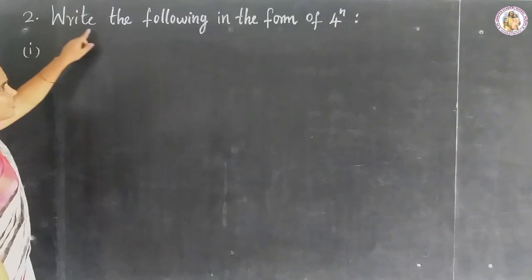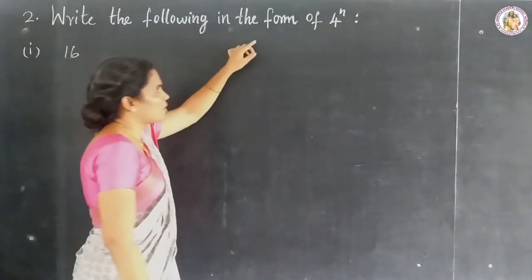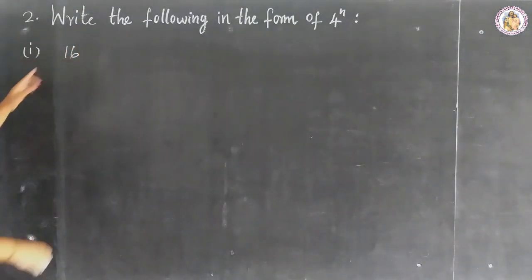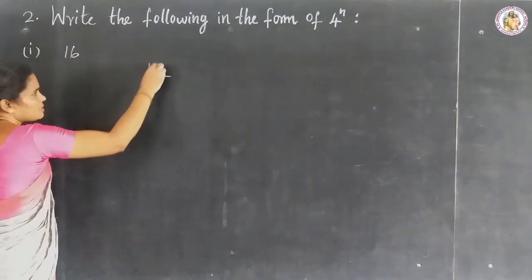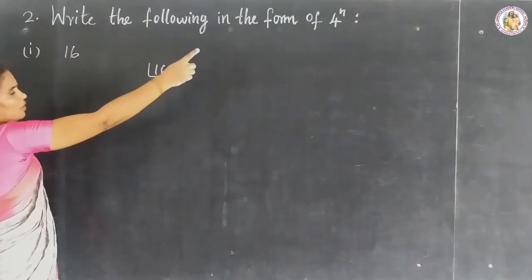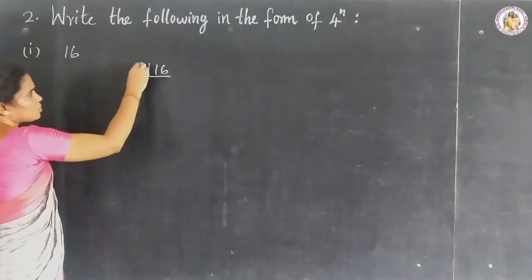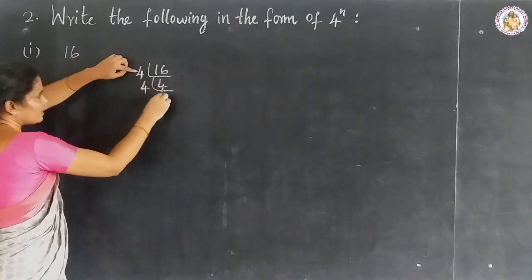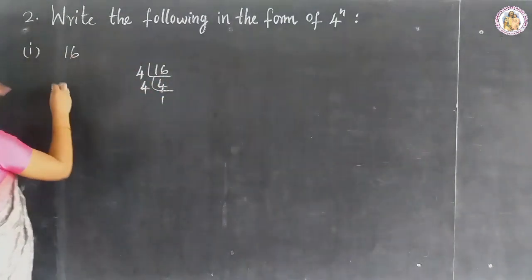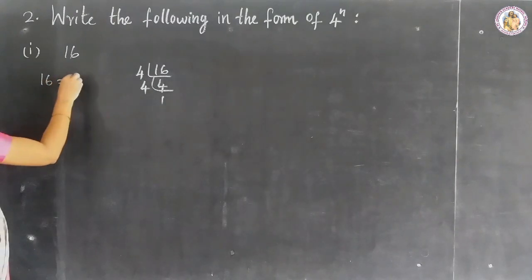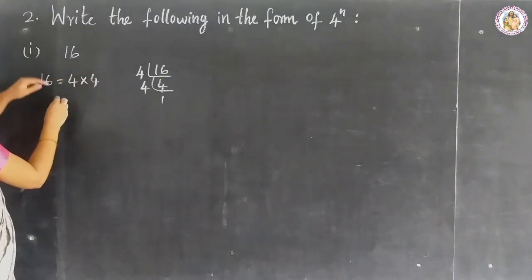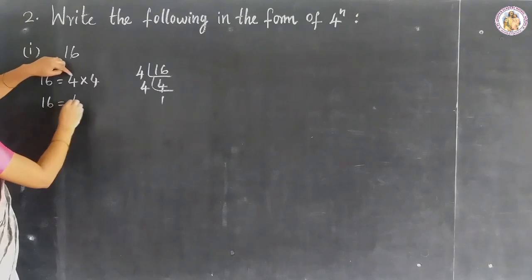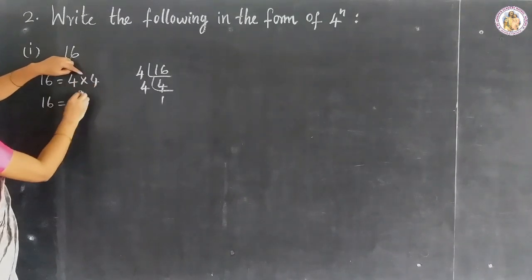Question number 2: write the following in the form of 4 to the power of n. Sub-question 1: 16. Taking the LCM for 16 using 4 tables — 4 fours are 16. So 16 equals 4 × 4, giving 4 to the power of 2.